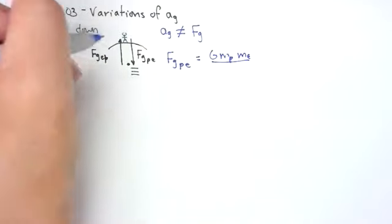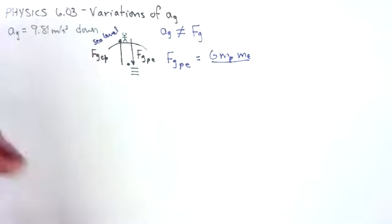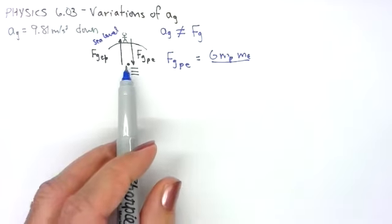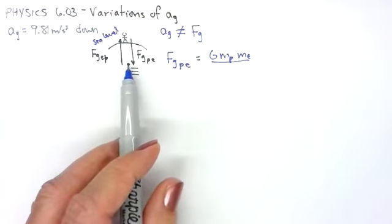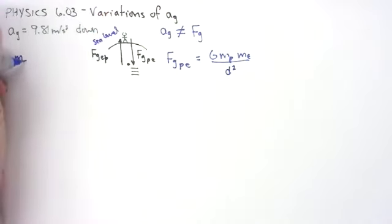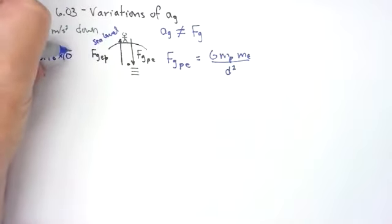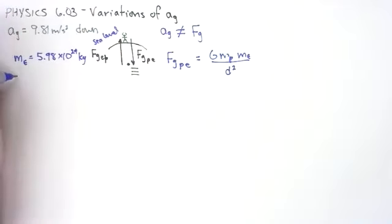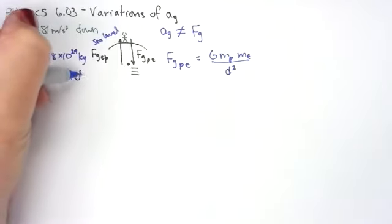We're assuming now that this is at sea level. We're going to need the distance from the person to the center of the earth, and this actually is the radius. So in this case, we want the radius of the earth. And this is going to be the distance squared. Turns out the mass of the earth is 5.98 times 10 to the 24th kilograms. The distance from the center of the earth to sea level would be 6.378 times 10 to the 6th meters.